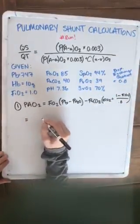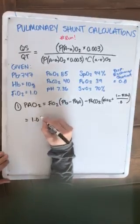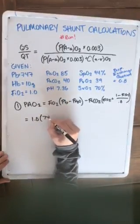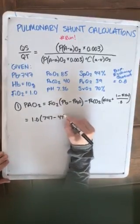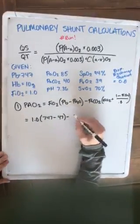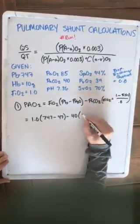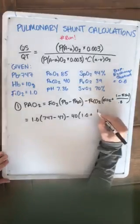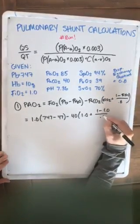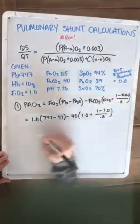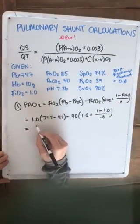So let's plug in some numbers. Our FiO2, which is given, is 100%, so we'll do 1.0 times our barometric pressure 747 minus our water pressure, which is always 47, minus our PaCO2, which was given, that's 40. FiO2 of 1 again, plus 1 minus our FiO2, which is 1, over 0.8.